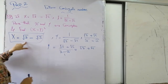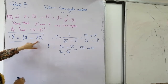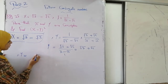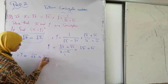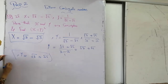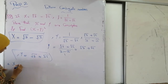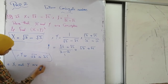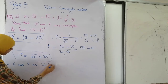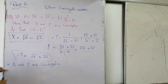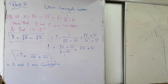So x equals root 3 minus root 2 and y equals root 3 plus root 2. Therefore, x and y are conjugate numbers.